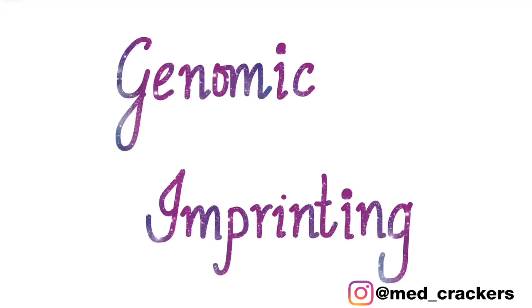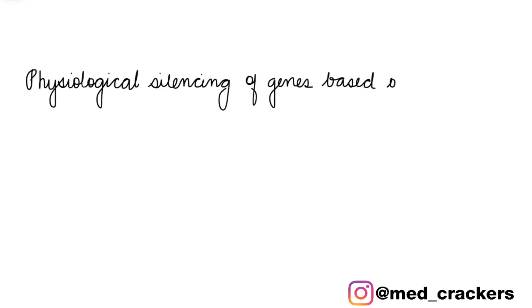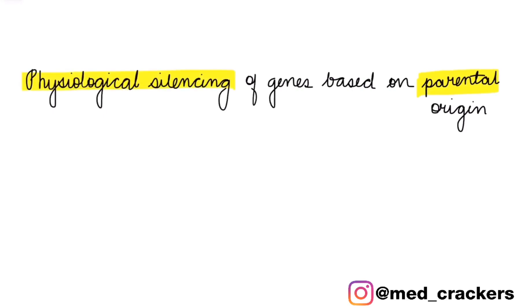Hello everyone, today I'll be talking about genomic imprinting. Genomic imprinting can be defined as the physiological silencing of a gene or genes based on the parental origin. Depending on the origin of the chromosome on which the gene is present — whether paternal or maternal — it is physiologically silenced.